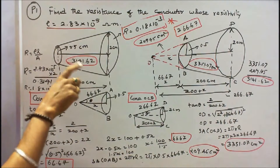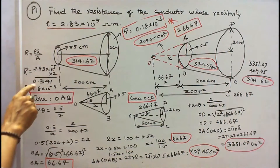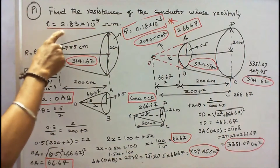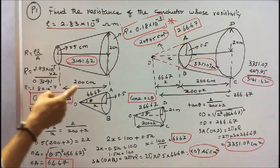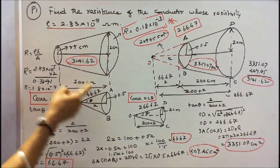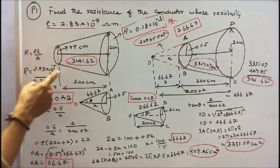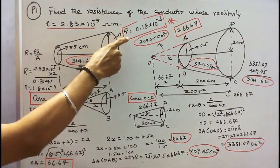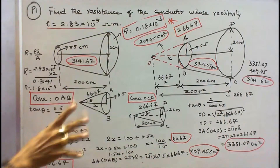Converting to m²: 3141.62 ÷ 10⁴ = 0.3141 m². With rho = 2.83 × 10⁻⁵ ohm-meter and L = 200 cm = 2 m, the resistance R = (2.83 × 10⁻⁵ × 2) / 0.3141, which gives R = 0.18 × 10⁻³ ohms.